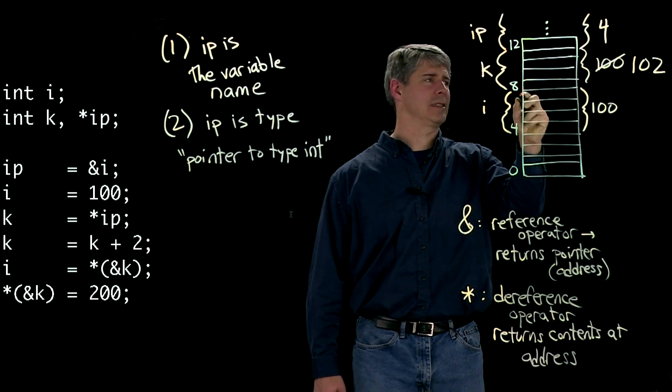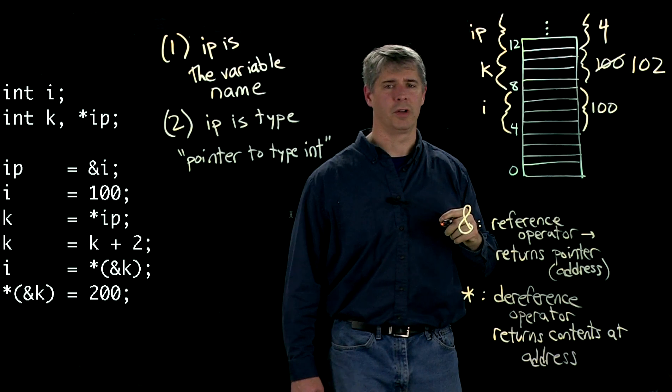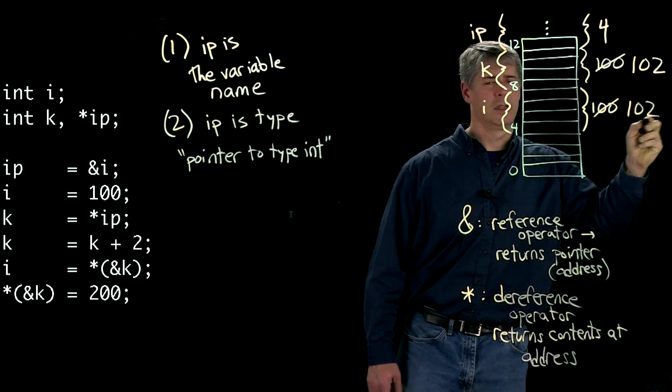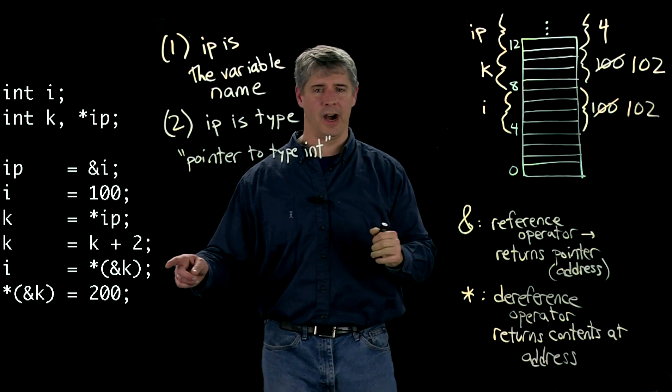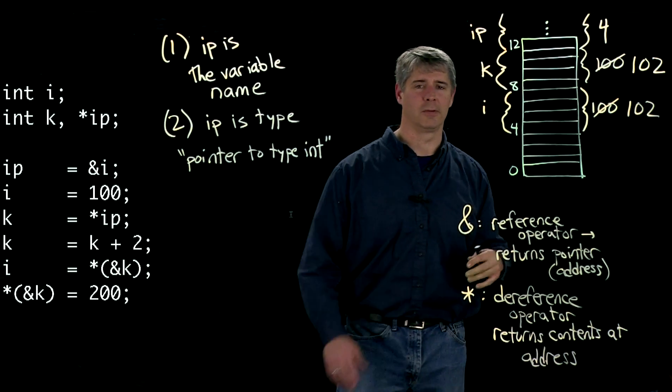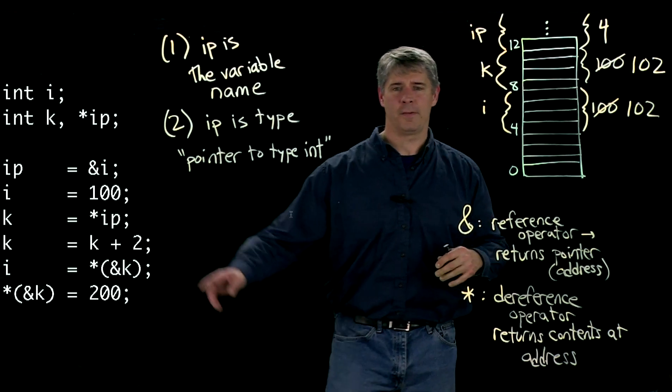So the address of k is 8. Take the contents of it. It's 102. So i is equal to 102. This changes to 102. This is just a complicated way of saying i is equal to k. But you can see the use of both referencing and dereferencing in the same line.